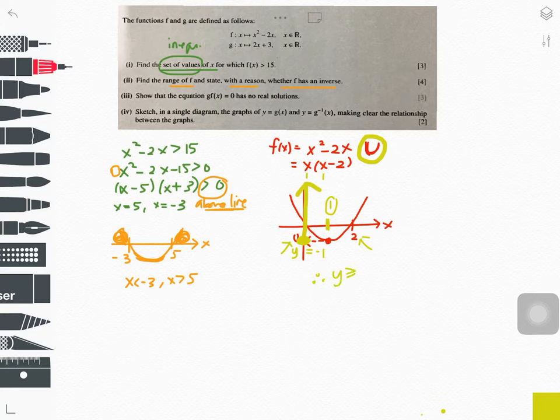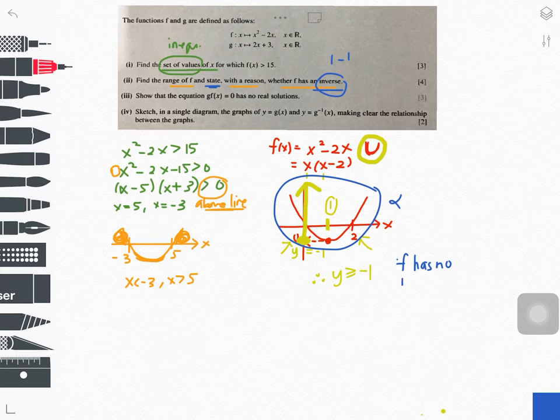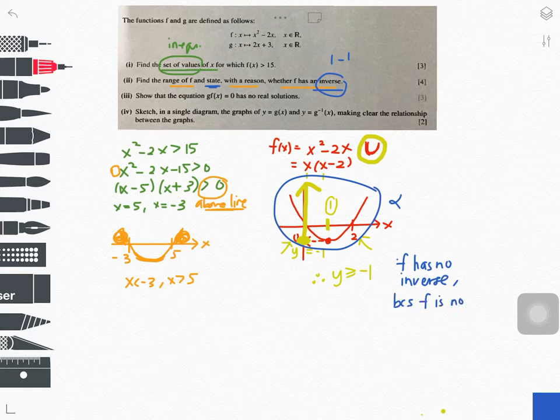So y equals negative 1. Therefore, what is your range? y greater than or equal to negative 1. Simple. Now I have to tell whether there's an inverse or not. When will the inverse exist? Only when it is one-to-one. Does it look like a one-to-one? No, it's many-to-one. Just write the answer: f has no inverse because f is not a one-to-one function. Please write this in full.